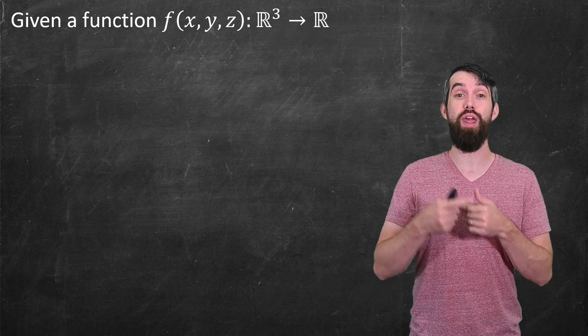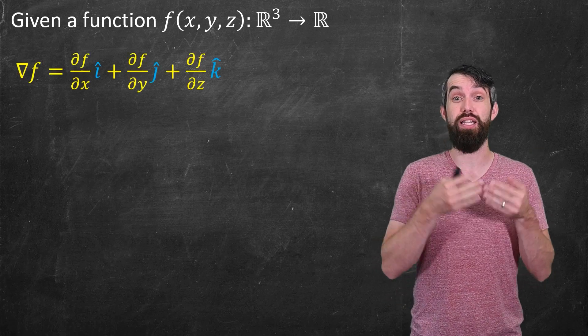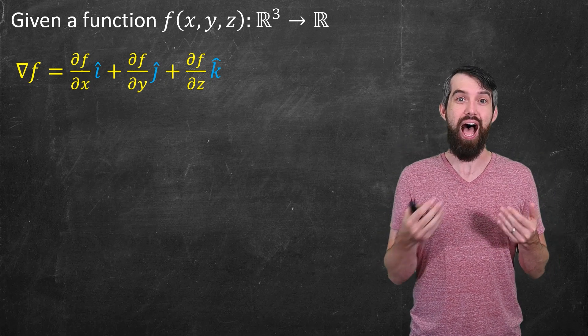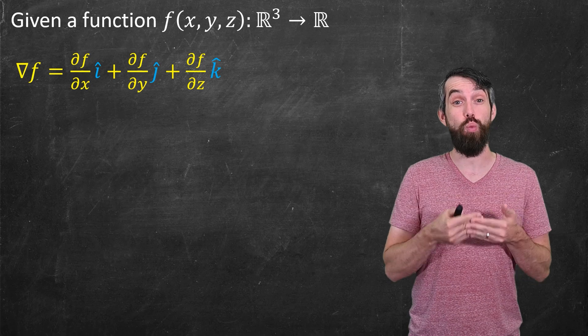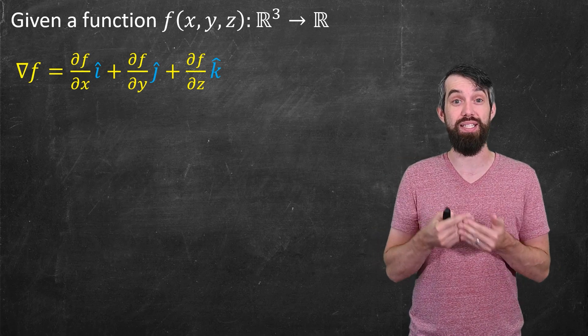you could take what we called previously in multivariable calculus the gradient. The i-hat component is the partial with respect to x, the y-hat is the partial with respect to y, and the k-hat is the partial with respect to z.